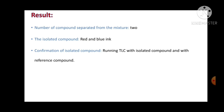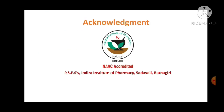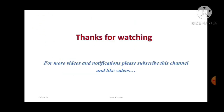We already saw one experiment. For confirmation of the isolated compound, we can match RF values by running a TLC with sample and reference. In this case it is clearly visible because they are colored spots, so we can easily make out the identity. That is all with the column chromatography. Thank you.